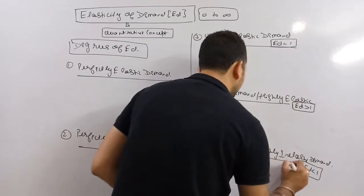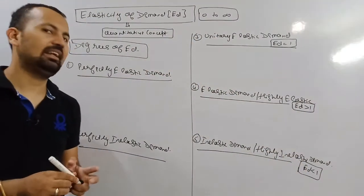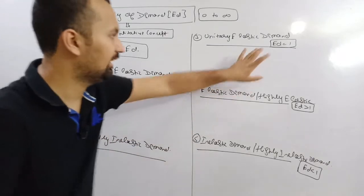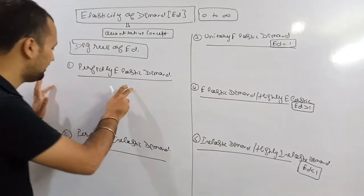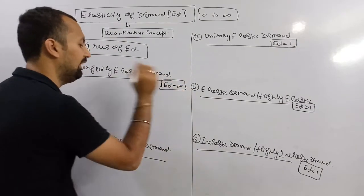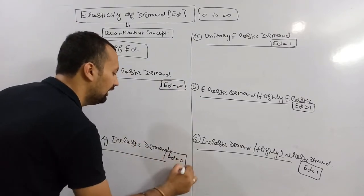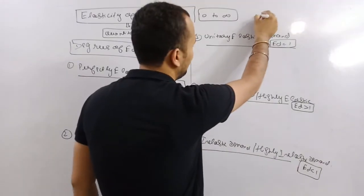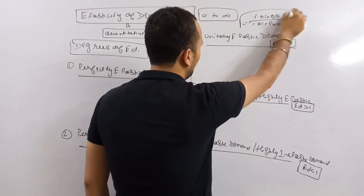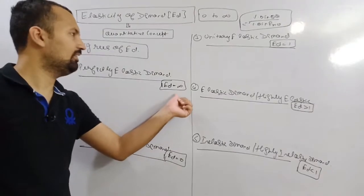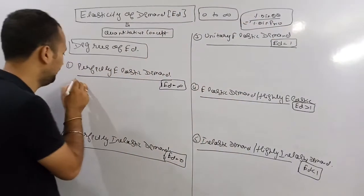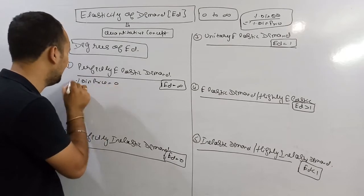The degrees are classified one by one. Perfectly elastic demand means Ed equals infinity. Perfectly inelastic demand means Ed equals 0. Using the formula — percentage change in quantity upon percentage change in price — perfectly elastic demand occurs when the percentage change in price is 0. When percentage change in price is 0, the answer becomes infinite. This can be shown in a schedule where price remains constant at 10, but quantity demanded changes from 10 to 20, meaning there is no change in price.